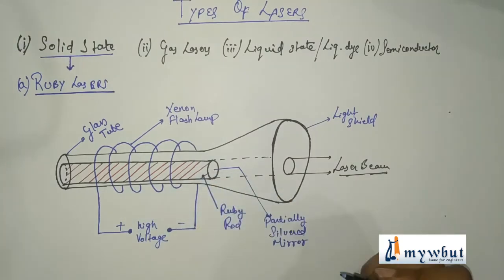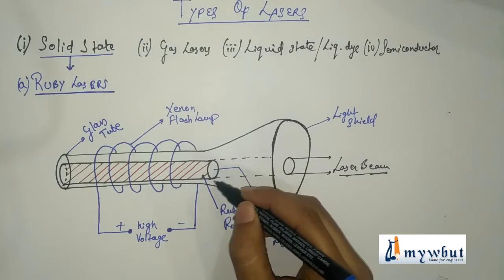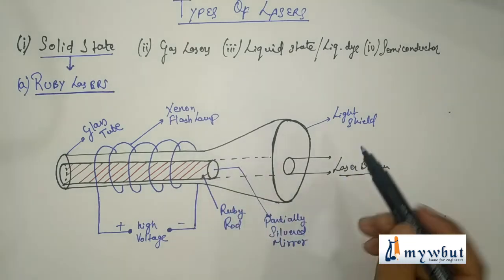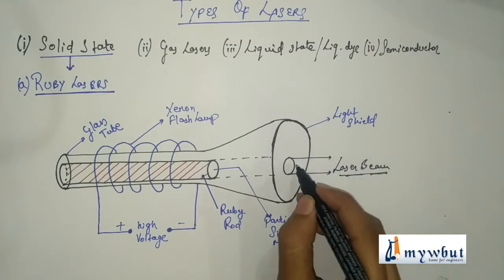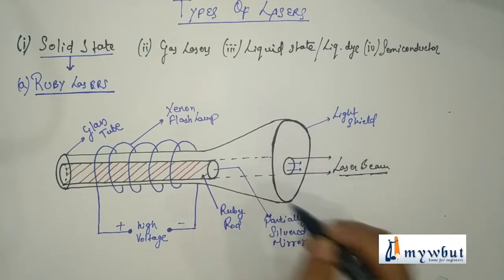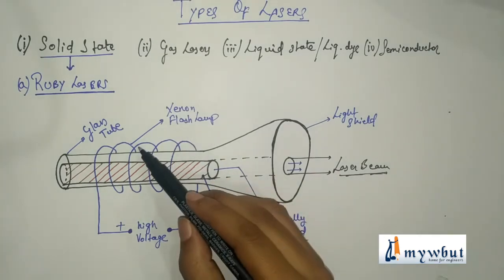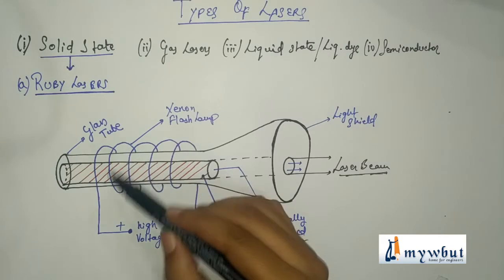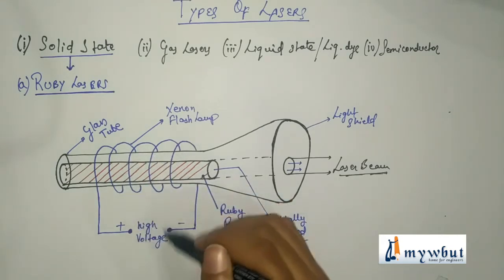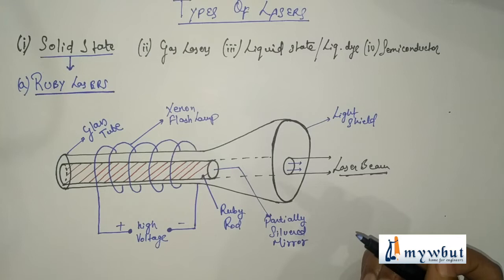This is the ruby rod. This one is the ruby rod, the main content of this type of laser. This surface is partially silvered mirror. This is the light shield, this surface. From here, the emergent laser beam emerges. These are xenon flash lamps. It's like a ring. And here, we have to produce high voltage.